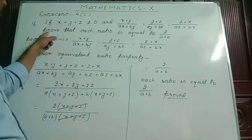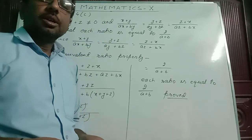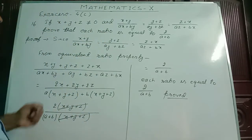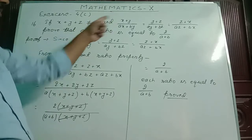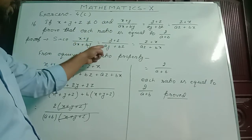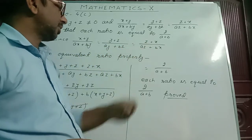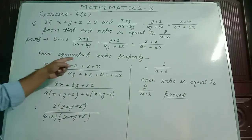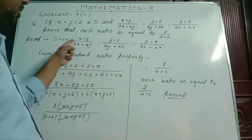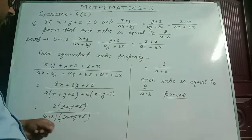As per the statement, here each ratio is written, so we will apply the property of equivalent ratio. I have written the given information: x plus y by ax plus by equals y plus z by ay plus bz equals z plus x by az plus bx. From equivalent ratio property, the sum of numerators equals the sum of numerators by the sum of denominators.